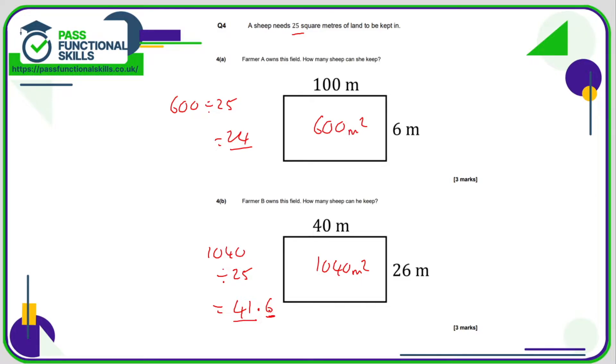Notice here that we're rounding down to 41. 41.6 is closer to 42 than 41, but if he goes for 42 sheep, then he's exceeded the 25 square metres. Not by much, but he has exceeded it nonetheless.